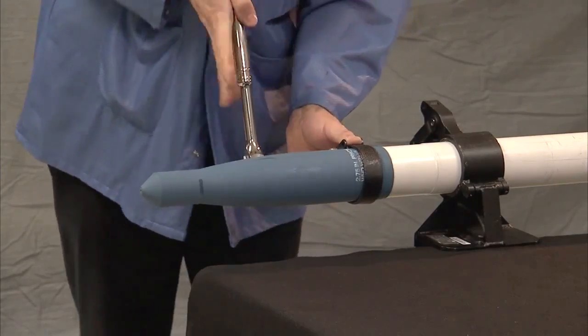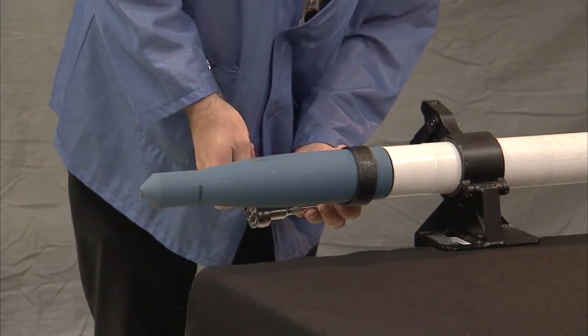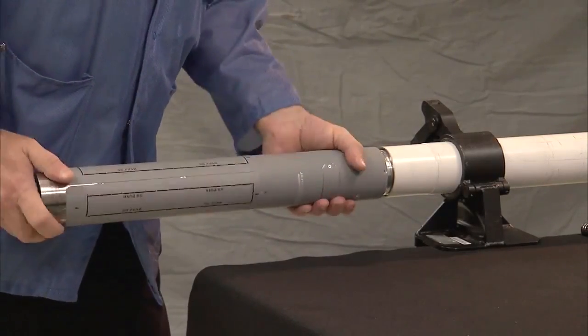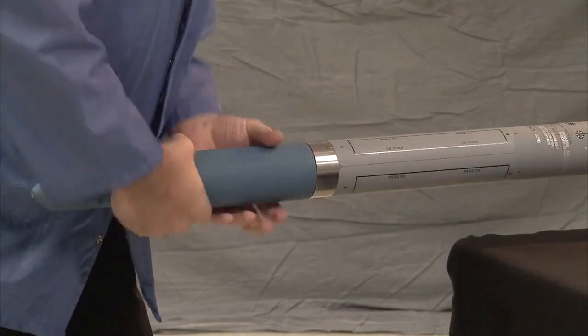The unguided rocket is placed into a fixture where the fuse and warhead are removed from the rocket motor using a strap wrench. Next, the guidance unit is screwed into the rocket motor and the warhead and fuse are screwed into the guidance section to complete the conversion.